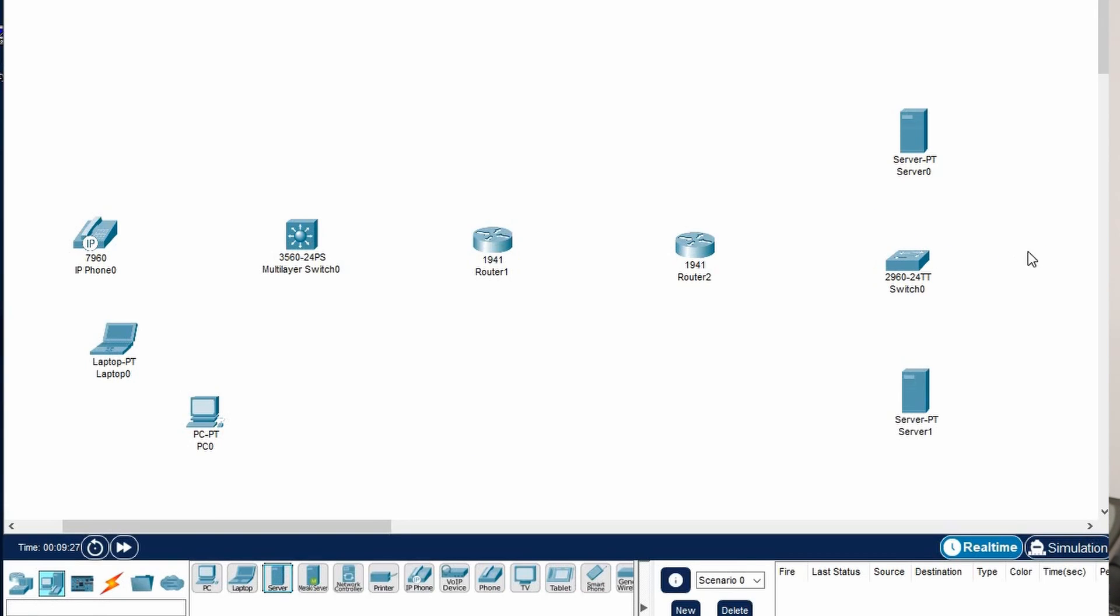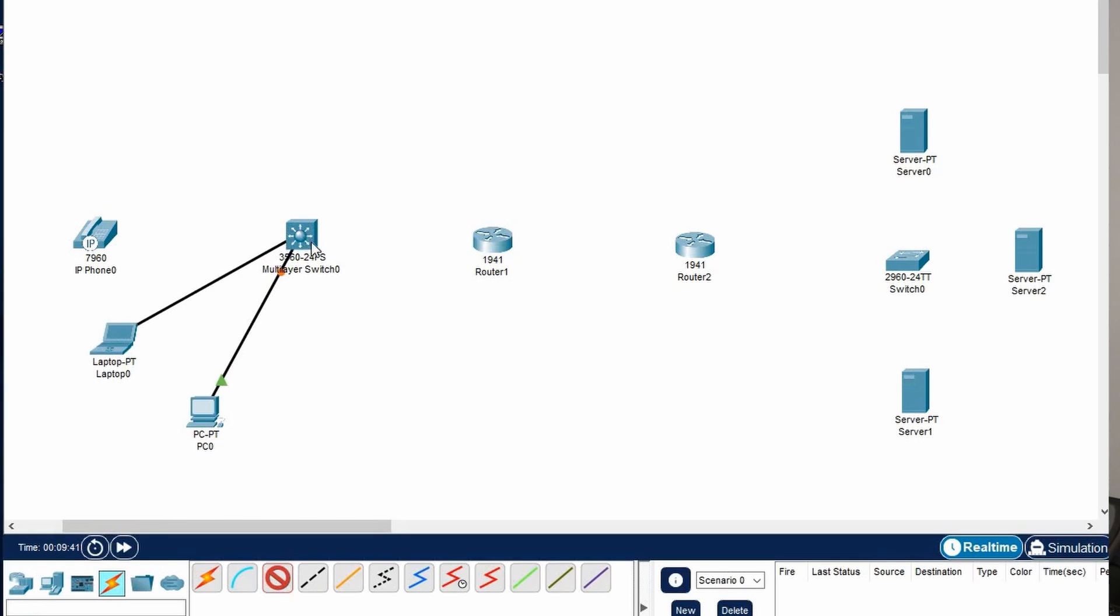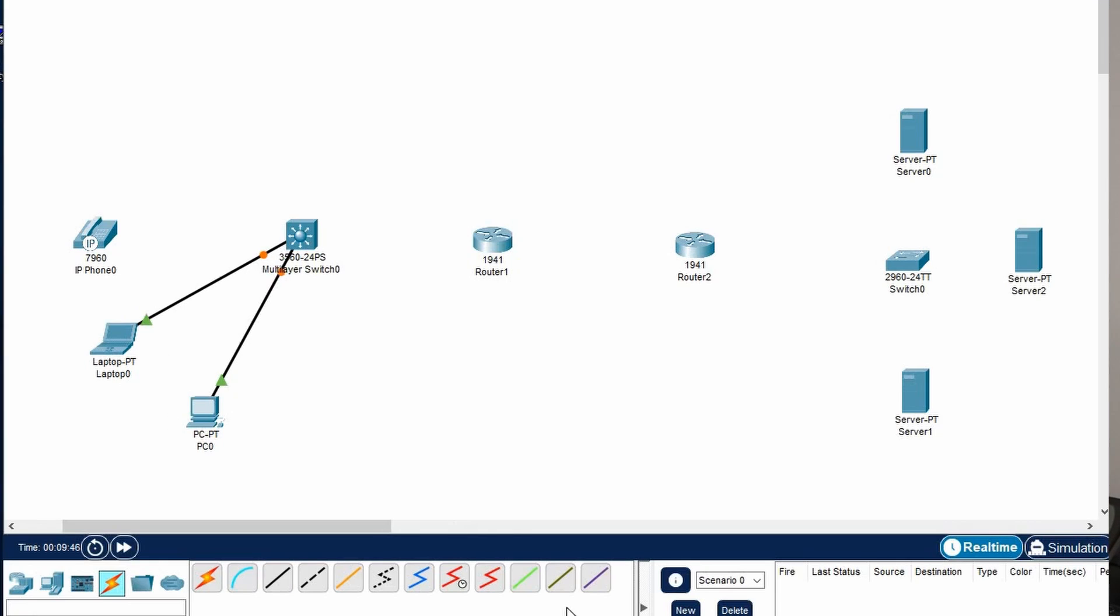So when you open Packet Tracer it looks something like this. It's very visual. It gives you a bird's eye view of what your network topology is going to look like. So it's got a drag and drop feature. You go and drag your router, you place it on the screen and then it puts it. You pick a network cable that you're going to connect your router, whether it's serial or LAN cable, and then depending on what device you want to connect on the other end.